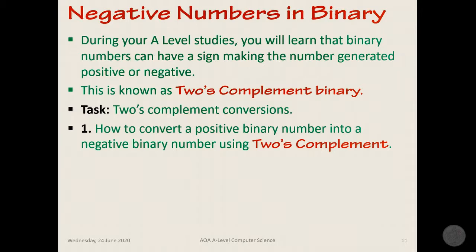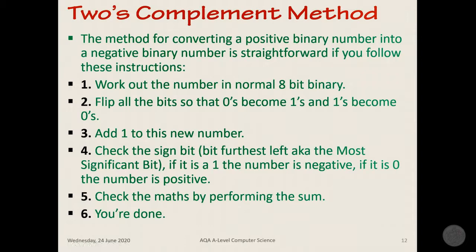The next part we are going to do is a little introduction to something you will study in September, and it is called two's complement. As you can see from the title, it means negative numbers using binary. So you are going to learn how to convert a positive binary number into a negative binary number using two's complement. So this is the method you need to follow: 1. Work out the number in normal 8-bit binary. 2. Flip all the bits so that 0's become 1's and 1's become 0's. 3. Add 1 to this new number. 4. Check the sign bit, that is the bit furthest left, also known as the most significant bit. If it is a 1, the number is negative. If it is a 0, the number is positive. Check the math by performing the sum and then 6, you're done, simple as that.